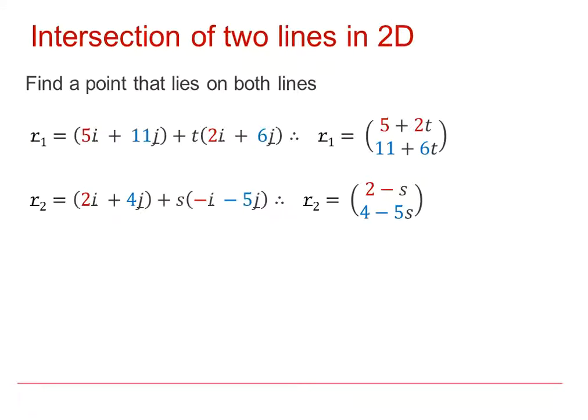So here we have two lines in two dimensions called R1 and R2, and we need to find a point that lies on both lines. The first straight line has been written as R1 equals a single column vector, and the second straight line has also been written as R2 equals a single column vector.